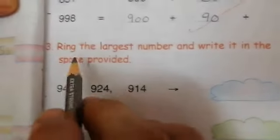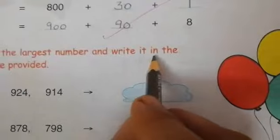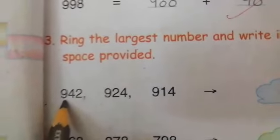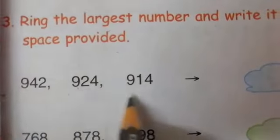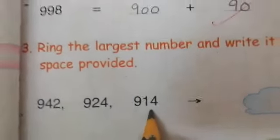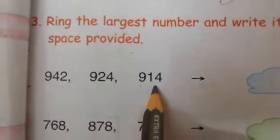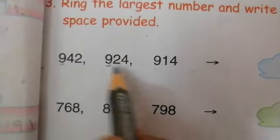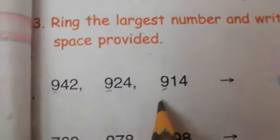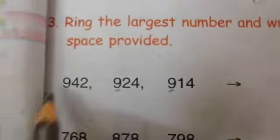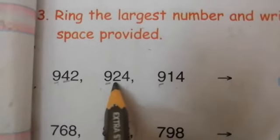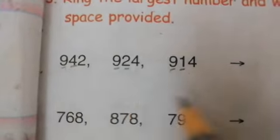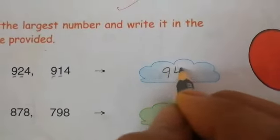Question number 3: ring the largest number and write it in the space provided. First you have to read the numbers carefully. 942, 924 and 914. We have to ring the largest number. First we will check hundreds: 900, 900 and 900 — all the hundreds are same. Now next we will check tens: 4 tens, 2 tens, and 1 ten. The largest tens is 4. Then we will write here 942.